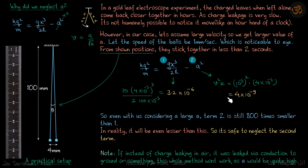Now you compare these two terms. You can see that this term is 800 times smaller than the first term. This is when we considered a large value of A. In reality, it will be even lesser than this.